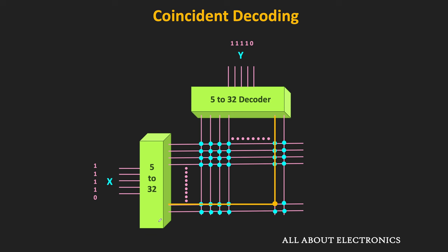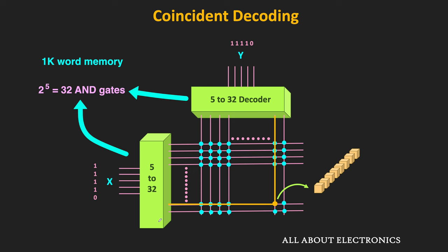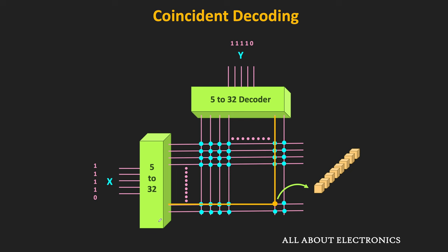Each word has n bits — in this case 8 bits. Using coincident decoding we can simplify the decoding logic. For a 1K word memory with a single 10-input decoder, we would require 1024 AND gates. But with coincident decoding using two 5-input decoders, each decoder has 2 to the power 5, that is 32 AND gates, requiring only 64 AND gates in total — significantly simplifying the decoding logic.